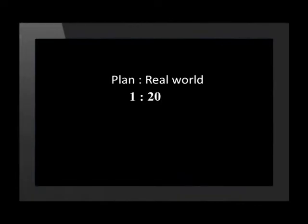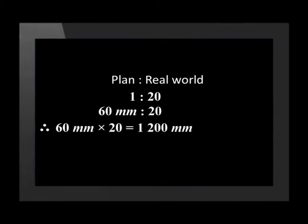Now we need to convert this measurement to the real life measurement. Plan to real world is to the scale of 1 to 20. This means that the actual length of the table is calculated by multiplying the measured length of 60 millimeters by 20. Therefore, the actual length of the table is 1,200 millimeters. This is equal to 1.2 meters.